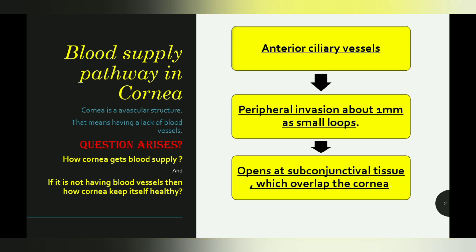The pathway starts with the anterior ciliary vessels — not directly in the cornea. The anterior ciliary vessels have a peripheral invasion of about one millimeter, forming small loops. These loops open at the sub-conjunctival tissue, not directly in the cornea. The blood is supplied at the sub-conjunctival tissue which overlaps the cornea.